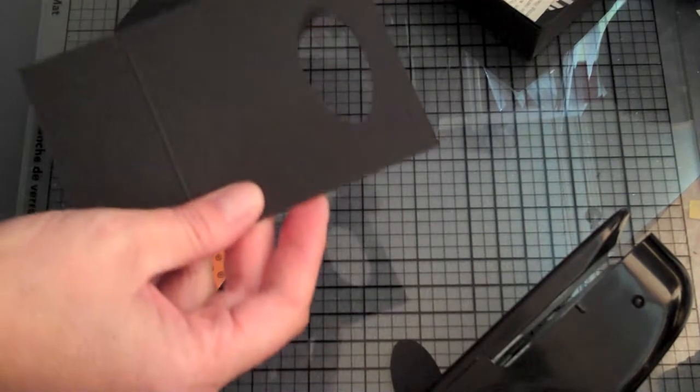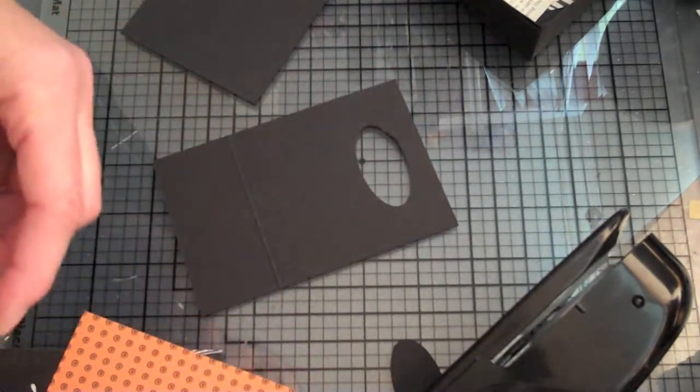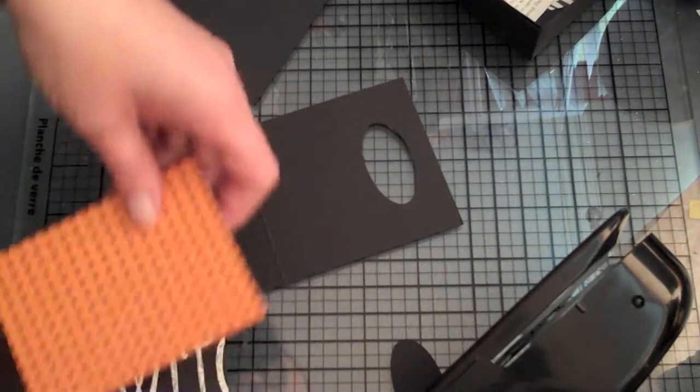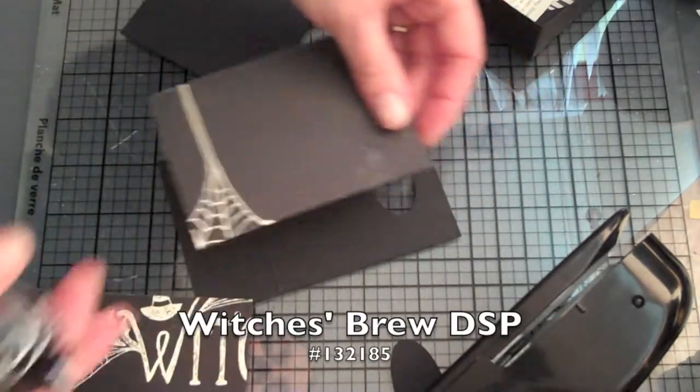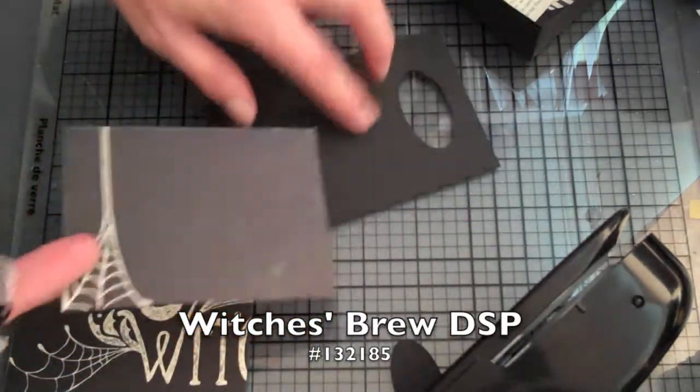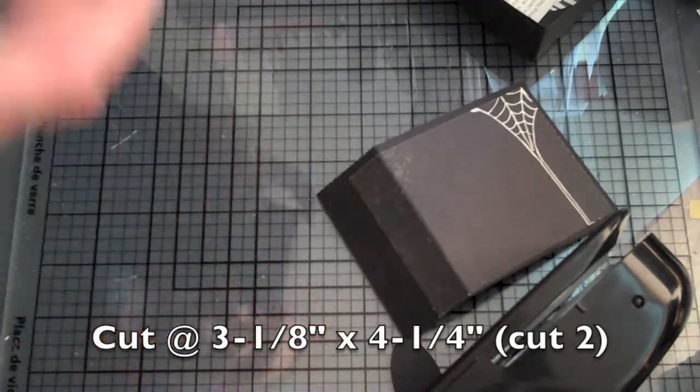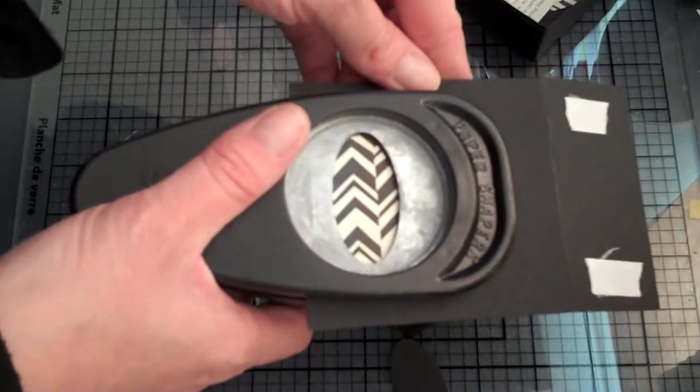Now the reason why I did this with separate pieces is because I've broken my punches before so you really should only do one layer of cardstock at a time. Next I'm going to put on the panel pieces here.